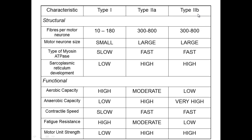When you train, the type 2b fibers actively convert into type 2a. For a top-line sprinter, that obviously isn't a good thing. But training actually causes that change — type 2b converts into type 2a. Then over a period of time after the exercise, after a week or several weeks, you get a conversion back from type 2a to type 2b. So initially during training, type 2b converts to type 2a, and then after a period of rest, it converts back from 2a to 2b.